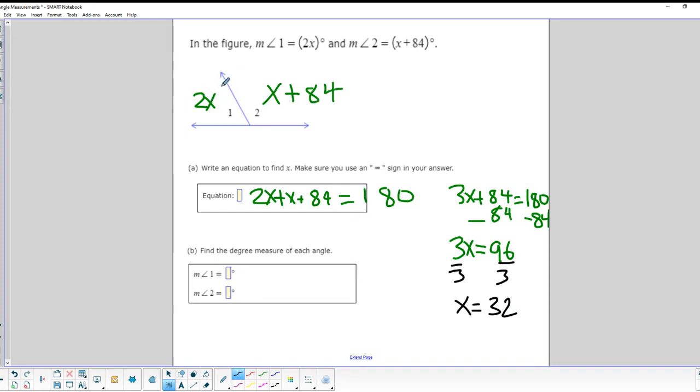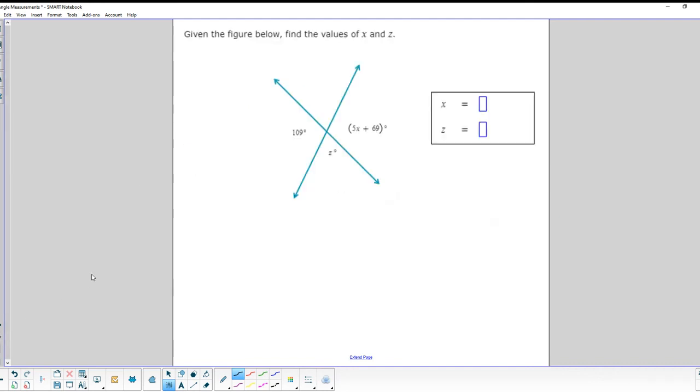All right. So we know that the measure of angle 1 is 2x's. So 2 times 32 equals 64. So this is a 64 degree angle. And then the next one is x plus 84. So if we do 32 plus 84 to get our next angle. And using our calculator, 32 plus 84. We end up with 116 degree angle for the second one. And we know that those two angles add up to 180 degrees. All right. Keep it going.